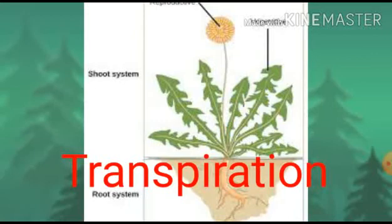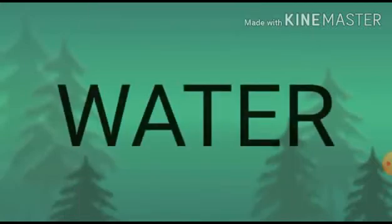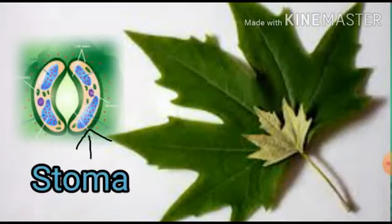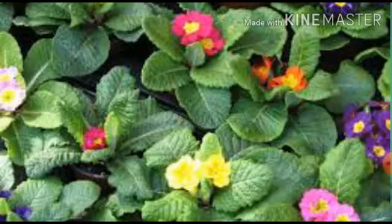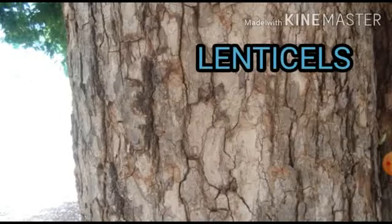Transpiration helps in the elimination of excess amounts of water. This transpiration occurs mainly through the stomata, which are present on the leaves. The general body surface also helps in transpiration. On old stems, we can find lenticels, and these all parts help in transpiration.